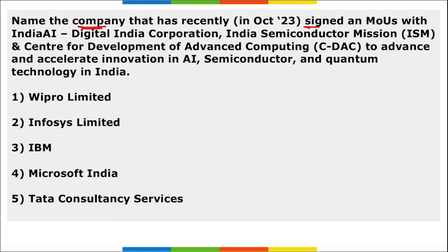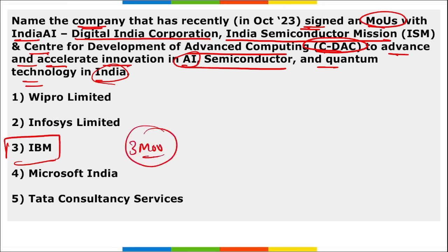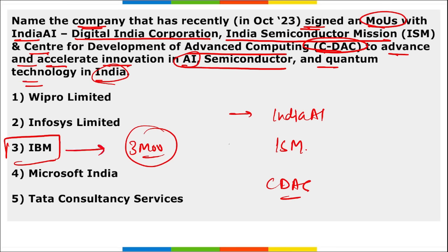Next, name the company that recently signed an MOU with India AI — Digital India Corporation — India Semiconductor Mission, and Centre for Development of Advanced Computing (C-DAC) to advance and accelerate innovation in AI, semiconductor, and quantum technology in India. The company is IBM — International Business Machines. They signed three MOUs: first with India AI, second with India Semiconductor Mission, and third with C-DAC.